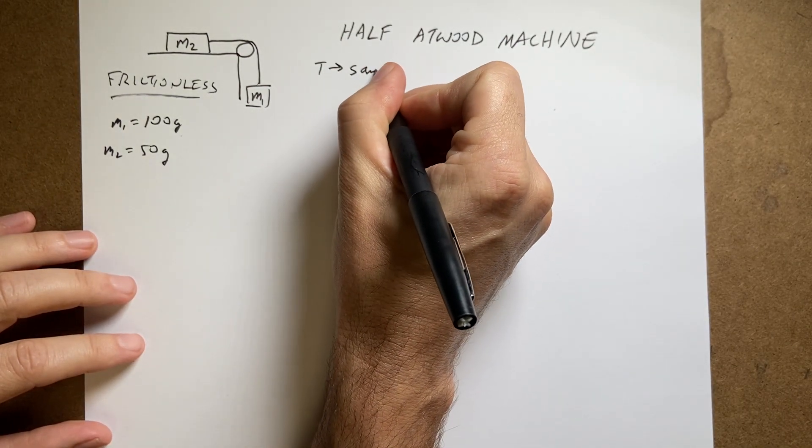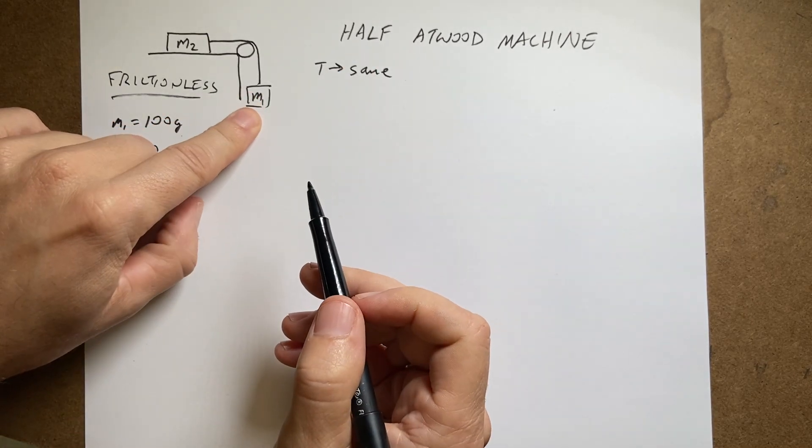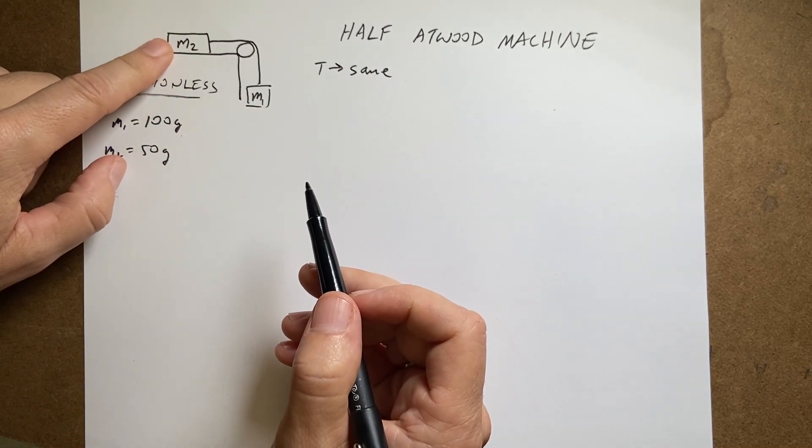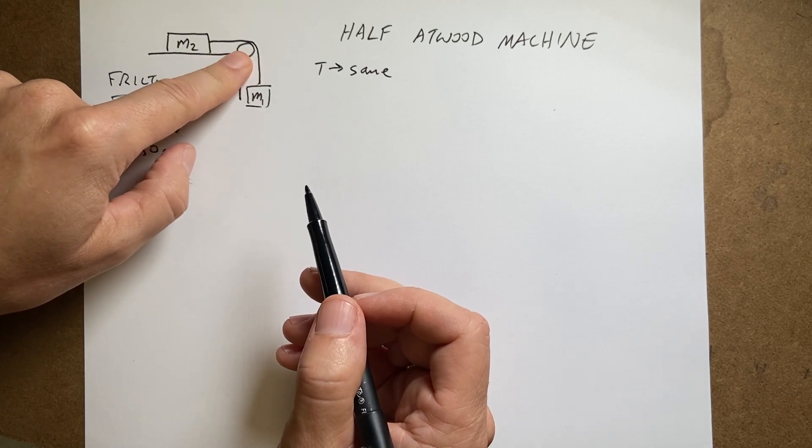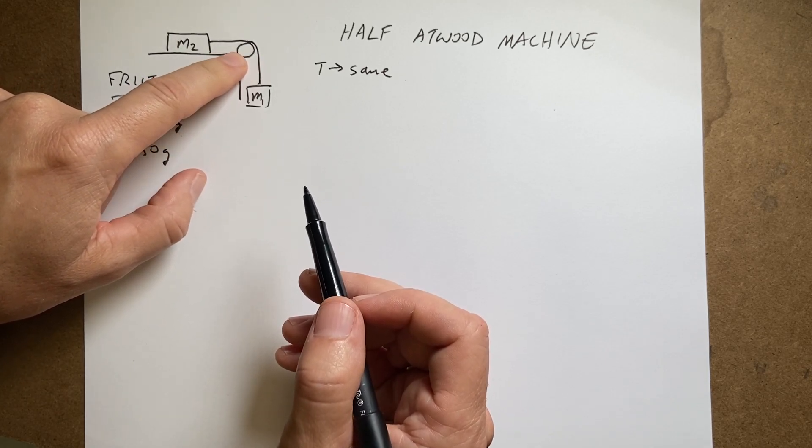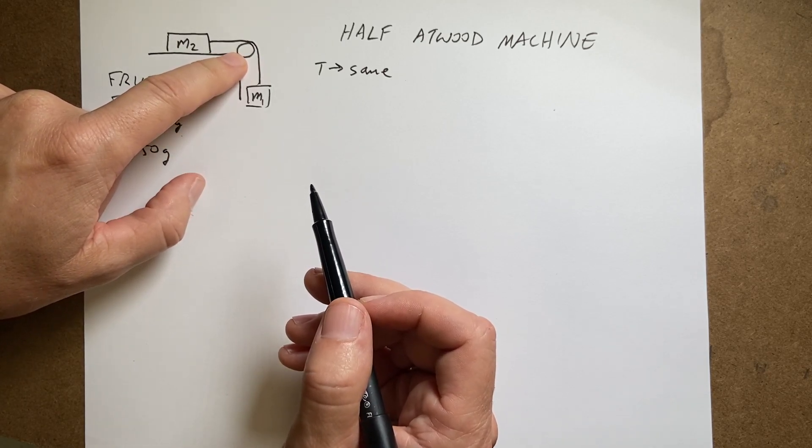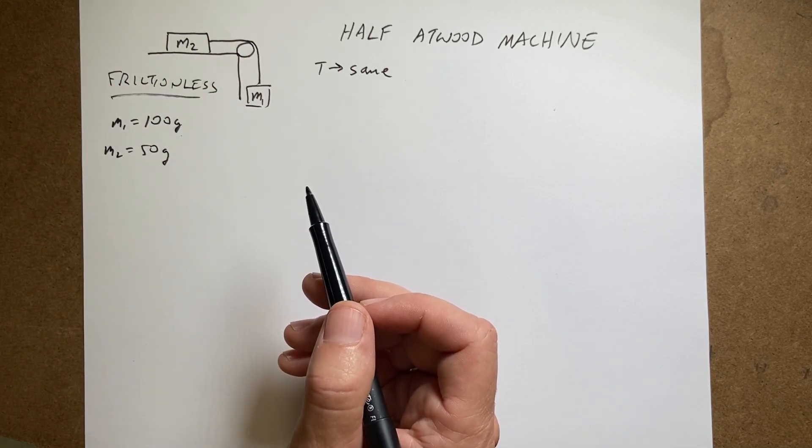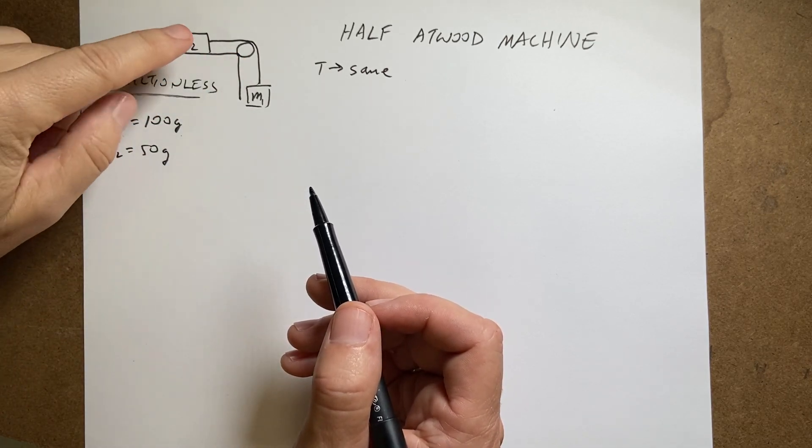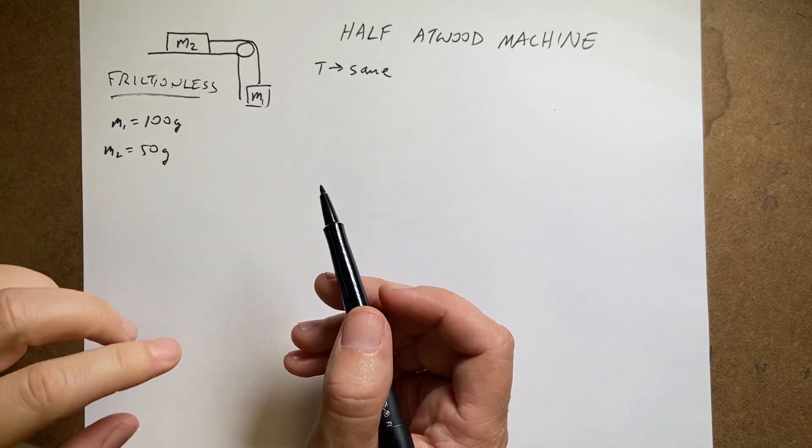Tension same. So the magnitude of the tension acting on mass one is the same magnitude of the tension acting on mass two. That's true if this is a massless frictionless pulley with a massless frictionless string. Okay, so the tension, even though they're in different directions, the magnitude is the same.